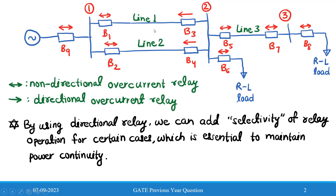We can understand this from a simple example. Suppose a fault occurs at line one — then circuit breaker three will see the opposite current, so relay R3 will operate. Relay R4 will not operate, so power in the rest of the lines will remain as it is, and line one will be isolated.